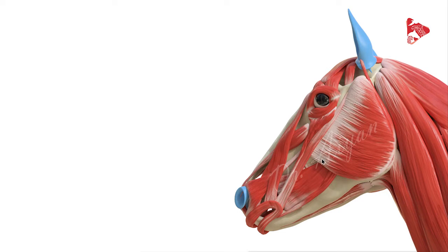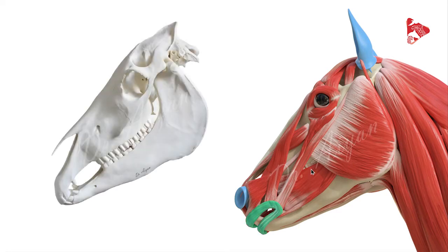Let's start with this photo here where we can see most of the muscles of the head, especially the ones visible in the lateral view of the horse's head. We'll start with the muscles of the lips and cheek, and the first one we'd like to talk about is this muscle highlighted in green.